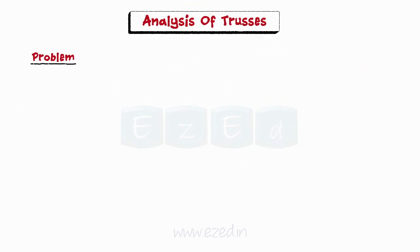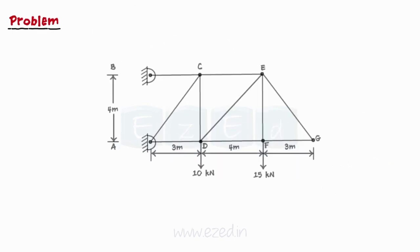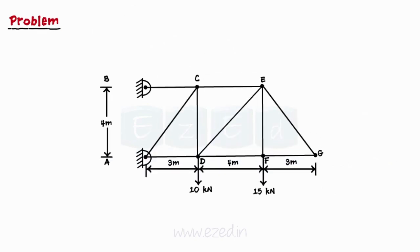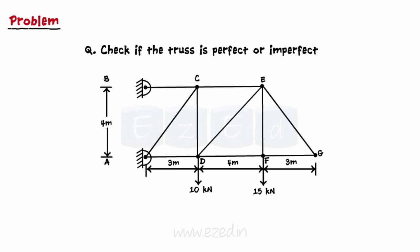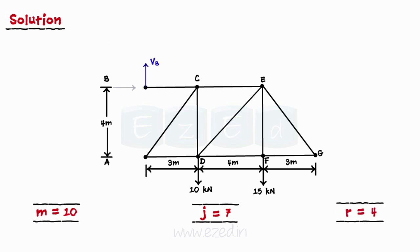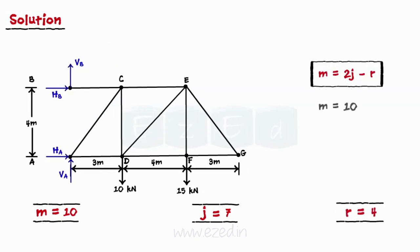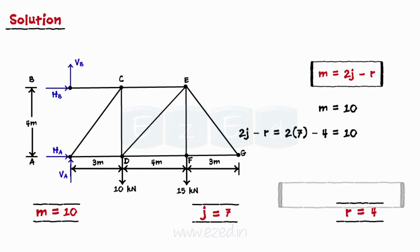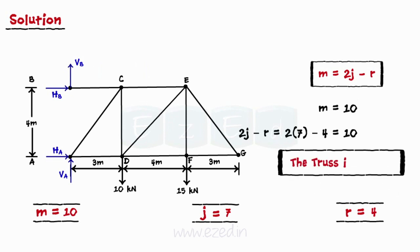Let us consider this problem now. Consider the truss shown alongside. Check if the truss is perfect or imperfect. We will first check if the truss is perfect or imperfect. The truss has 10 members, 7 joints, and 4 support reactions. Using the condition for statically determinate truss, we find that the truss is perfect.